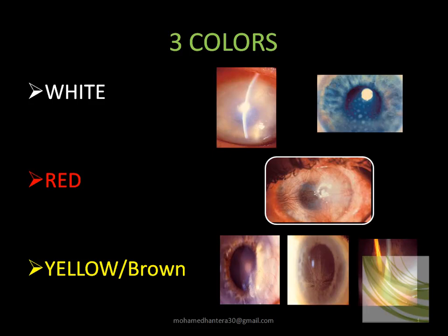There are also three colors seen in the cornea. It could be cloudy — white — or just deposits like those mutton fat KPs. The second common color is red, which indicates deep and superficial corneal vascularization.